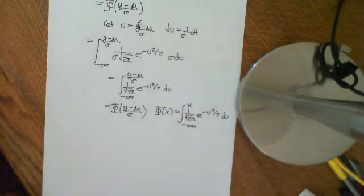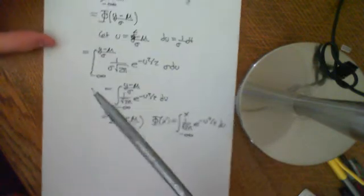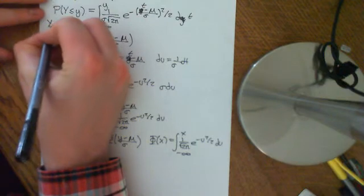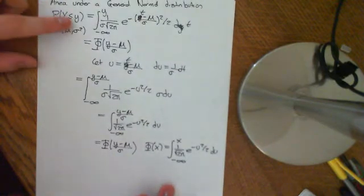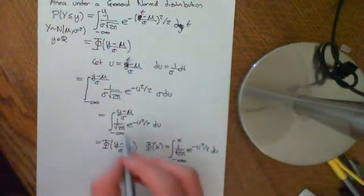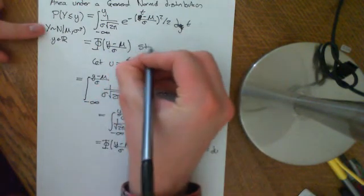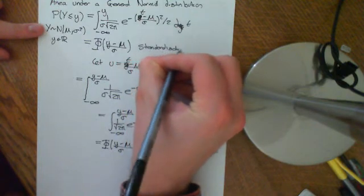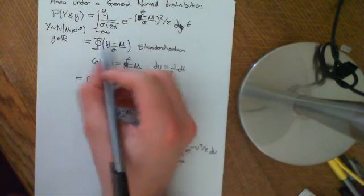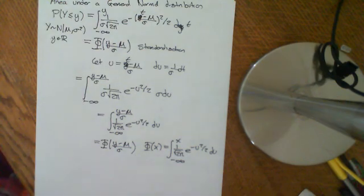That is an introduction to the general normal distribution. If you want to work out the probability that Y, given that Y is distributed normally with mean mu and variance sigma squared, is less than or equal to some little y, the way you do it is take phi of little y, subtract the mean, and divide by the standard deviation — the process of standardisation — reducing the problem to one in the standard normal distribution. Then take phi of that value, which your calculator can work out numerically or you can look up in statistical tables.